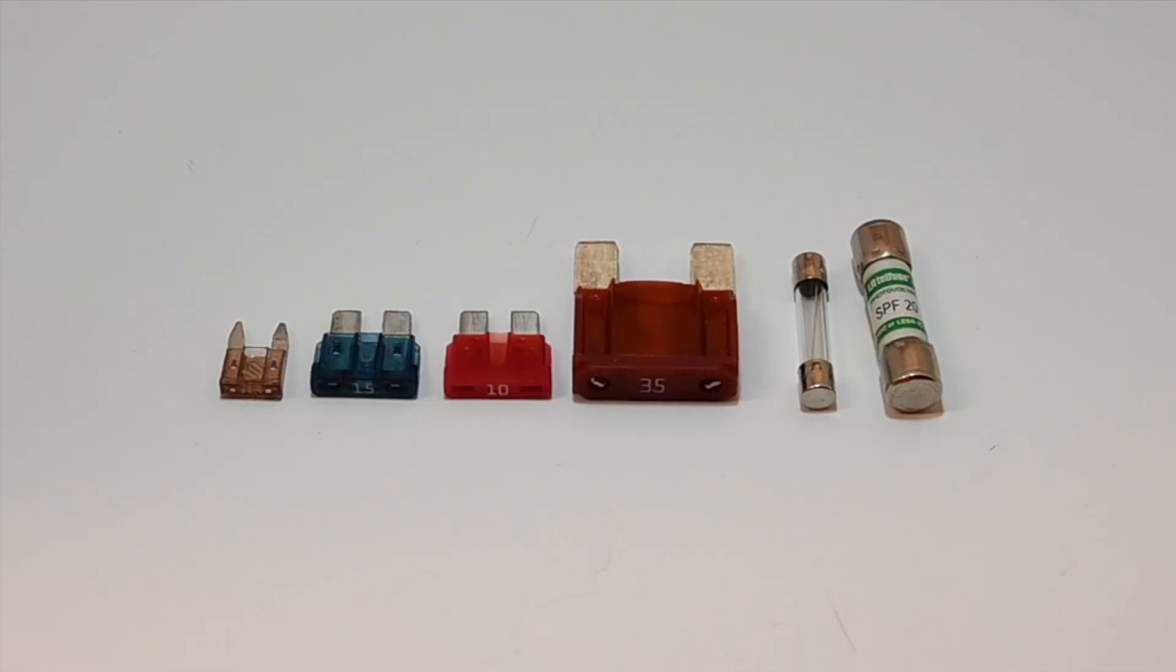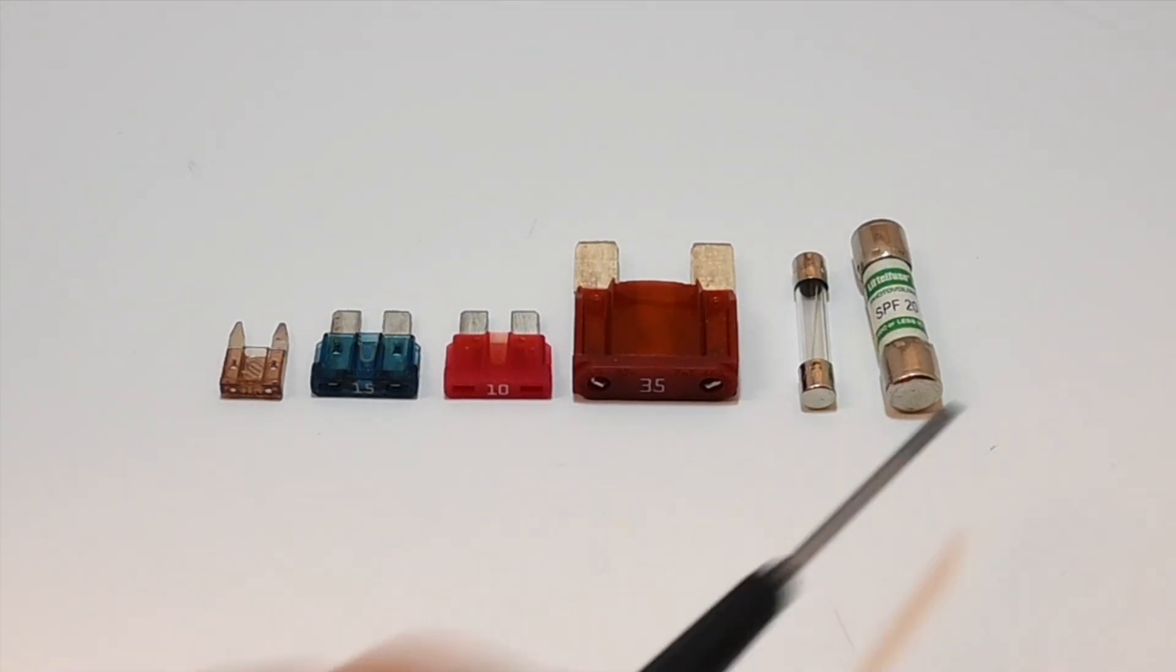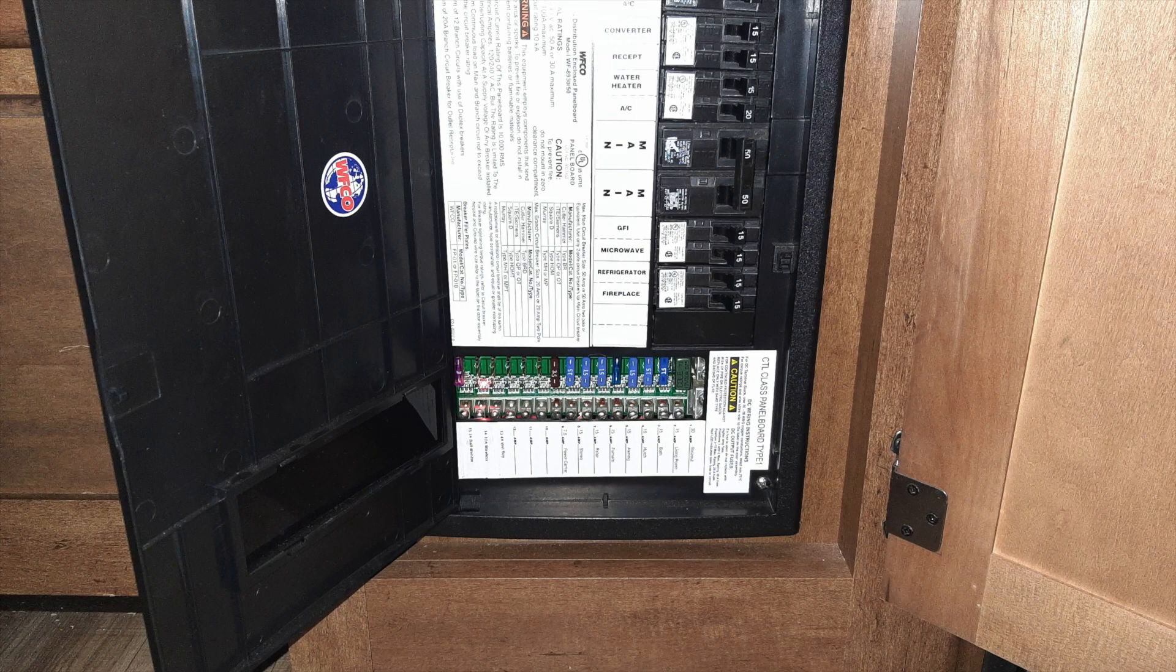Perhaps one of the biggest distinctions between the blade type fuses and the cartridge fuses is the DC voltage rating and that is important as I'll explain later. The primary purpose of a fuse in a distribution panel is to protect the wiring.